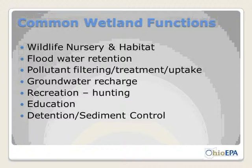Common wetland functions: wetlands are the sponges and kidneys of nature. The seven key functions include wildlife nursery and habitat, flood water retention, pollutant filtering and uptake, and groundwater recharge — which impacts people's drinking wells and well fields either positively or negatively. There's also a great deal of recreation and hunting activity that takes place on wetlands.